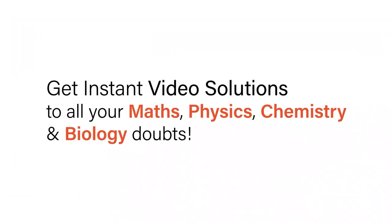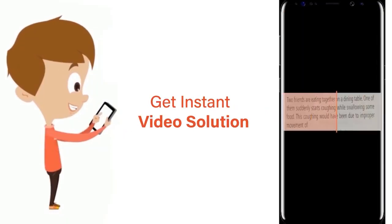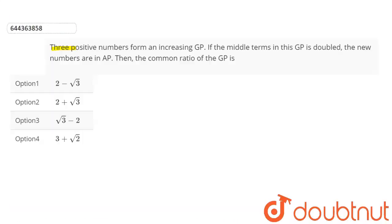With Doubtnet, get instant video solutions to all your maths, physics, chemistry, and biology doubts. Just click the image of the question, crop the question, and get instant video solution. Download Doubtnet app today. Question is: three positive numbers form